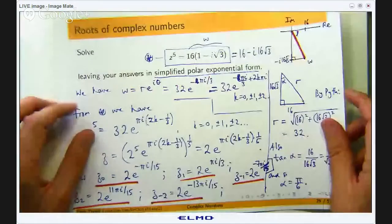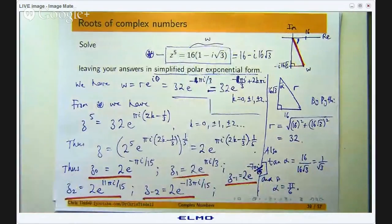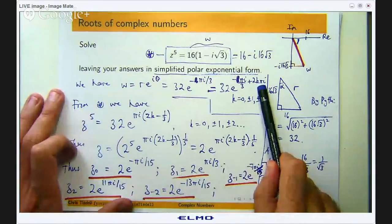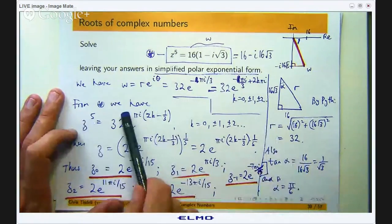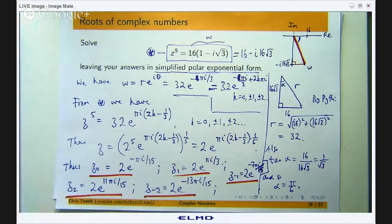To recap: to solve this type of problem, transform the right hand side into polar exponential form and generalize it with the 2kπ term to capture all solutions. Then apply your index laws and plug in values of k. The solutions will always be equally spaced around a circle. Thanks for watching — in forthcoming presentations I will do more examples involving polar exponential form. If you have comments, questions, or suggestions, feel free to put them in the comments box below.